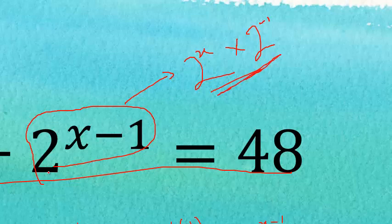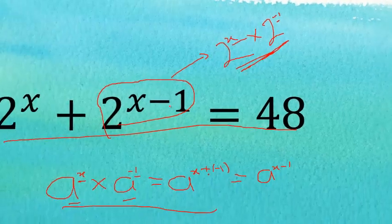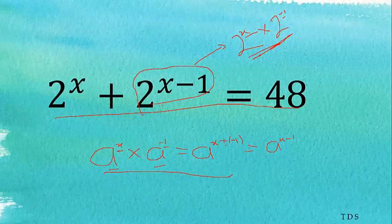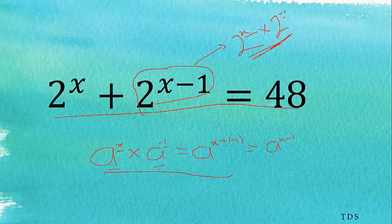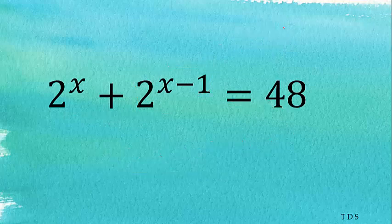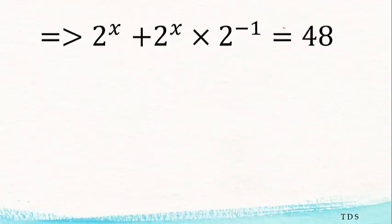The bases are the same, so we add the exponents: x plus minus 1 equals x minus 1. The next thing is we write this as 2 to the power x times 2 to the power minus 1.